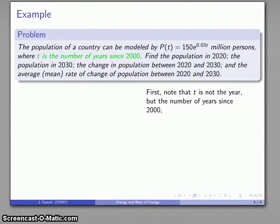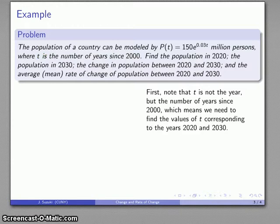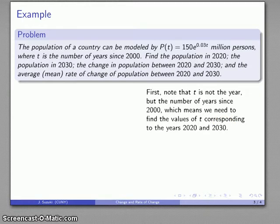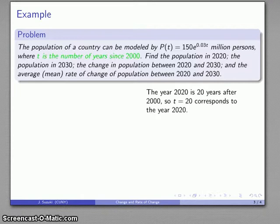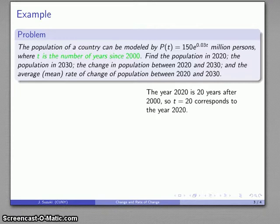First important thing to notice here is that t is not the year, but rather the number of years since 2000. So if I'm looking at the population in the year 2020, I need to find the corresponding value of t. The year 2020 is 20 years after 2000, so t equals 20. Since I want the population then, I'm going to evaluate P(20).